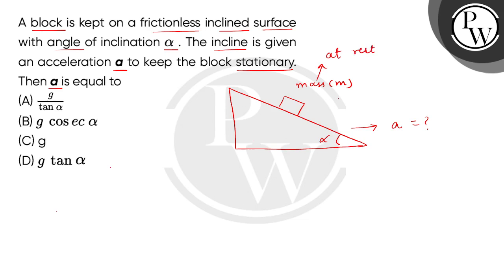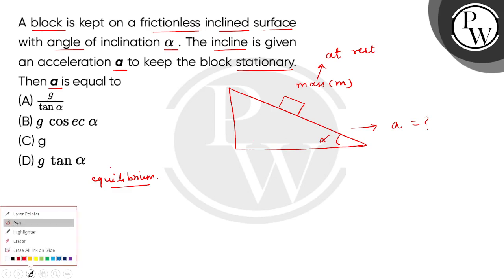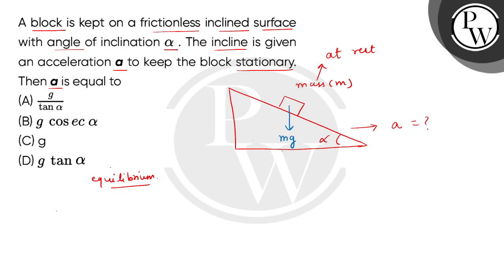It means the block does not slide. We can say that the block is not going to slide when all the forces are in equilibrium. When we analyze all the forces, the very first force is its weight acting vertically downward, Mg. Since the incline is given acceleration A, this block will feel a pseudo-acceleration in the opposite direction, which is A.